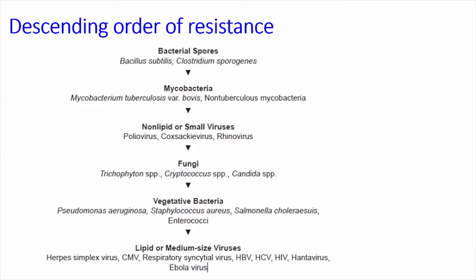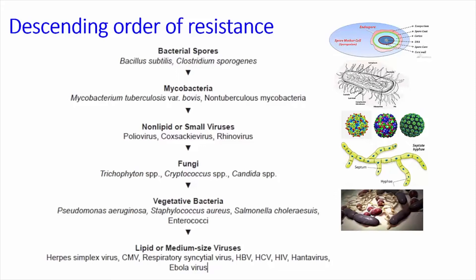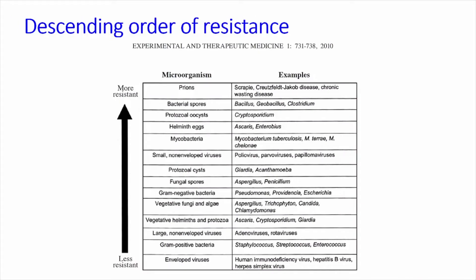Let's think about the challenge of inactivating different types of microbial life forms, expressed as a hierarchy from toughest to easiest. We begin with bacterial spores — some more resistant than others — then mycobacteria, then small protein-coated non-enveloped viruses including papillomavirus, then fungi, then ordinary vegetative bacteria, and finally the easiest to inactivate: medium to large lipid-coated viruses. We can also add prions — such as those involved in Creutzfeldt-Jakob disease — as an even higher level of difficulty, as well as protozoal cysts.